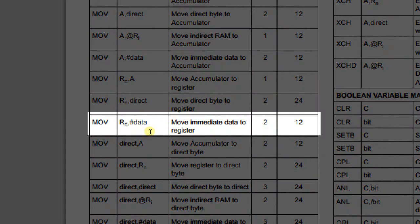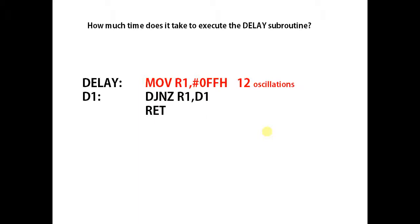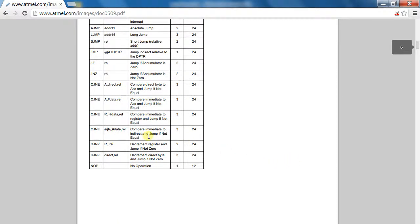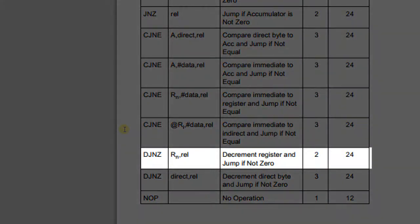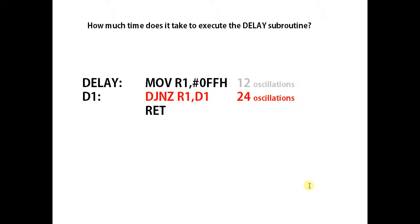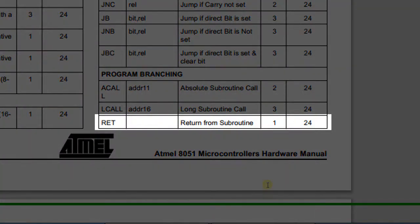The Move Immediate instruction takes 12 periods. The DJNZ instruction takes 24 periods. The Return instruction takes 24 periods.